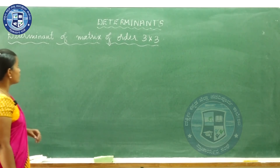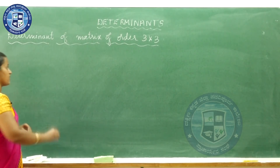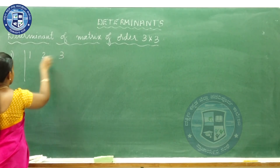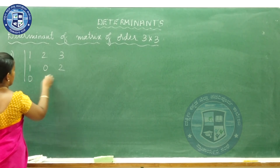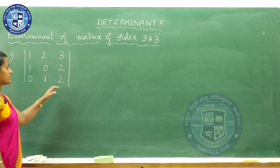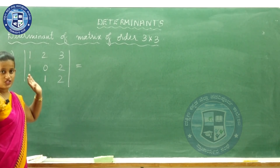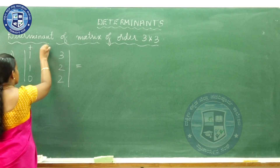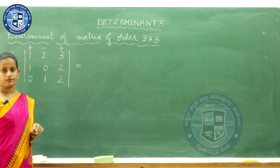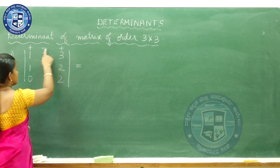Next, let us see how to find out the determinant of a 3×3 matrix. I'll explain directly with an example. Let the determinant be [1, 2, 3; 1, 0, 2; 0, 1, 2]. There is a sign convention to be used: plus, minus, plus. We will be expanding the determinant about the first row only.